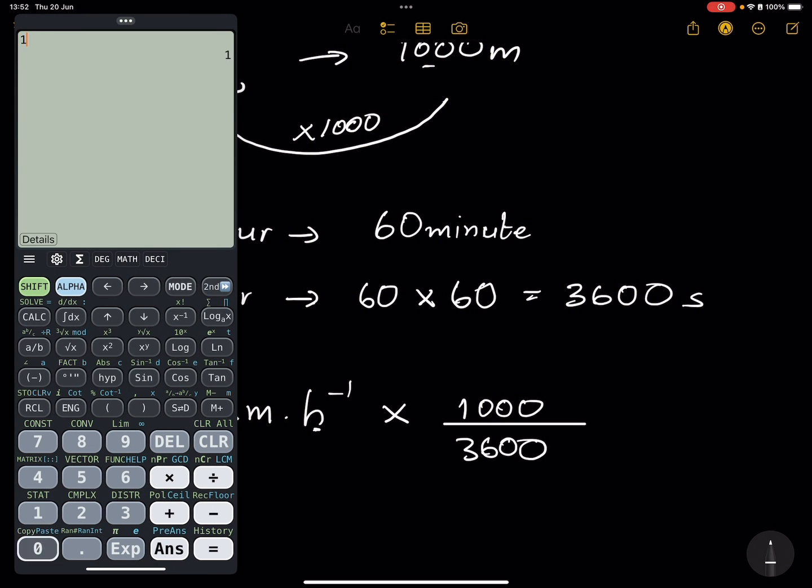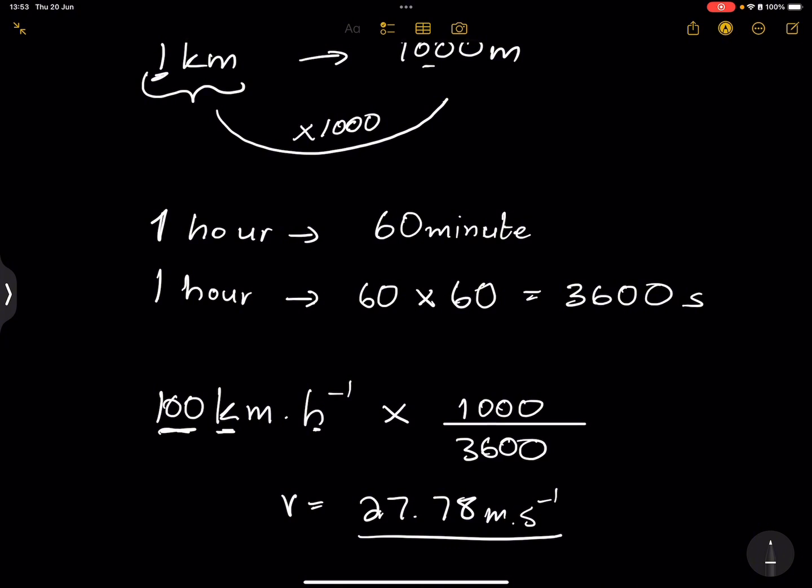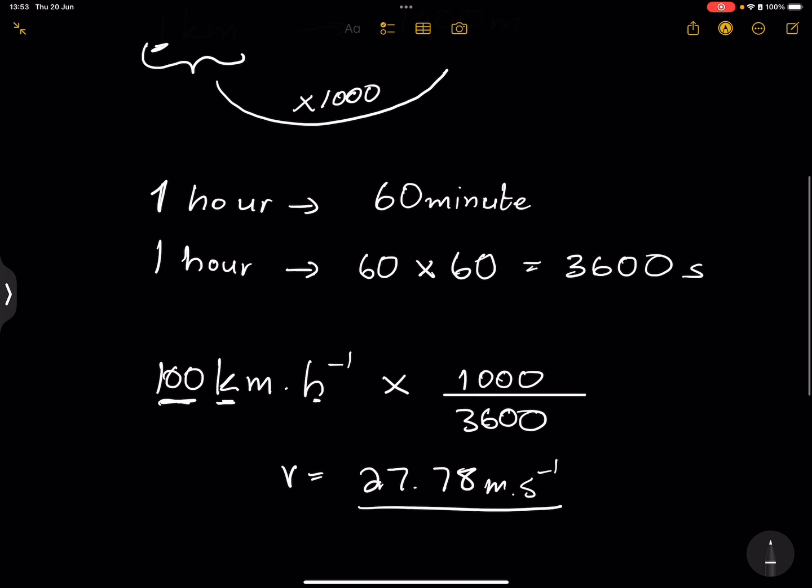So we're going to say 100 multiplied by 1000 divided by 3,600. Let's try to do that. So that's 100 times 1000 divided by 3,600. And I get a speed or velocity of 27.78 meters per second. If I round it off, it gives me 27.78, or you can say 27.8 if you are rounding off to one decimal place. So that's what we do.